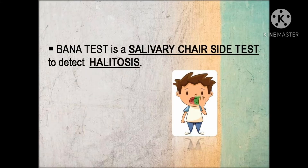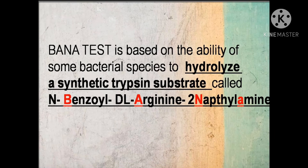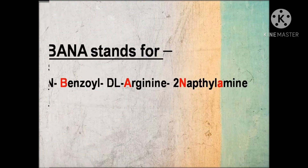BANA test is a salivary chairside test used to detect the problem of halitosis, i.e. breath malodour. This test is based on the ability of certain bacterial species to hydrolyze a synthetic trypsin substrate called N-benzoyl-DL-Arginin-2-Naphthalamine. Thus, the abbreviation BANA stands for the name of this trypsin substrate.